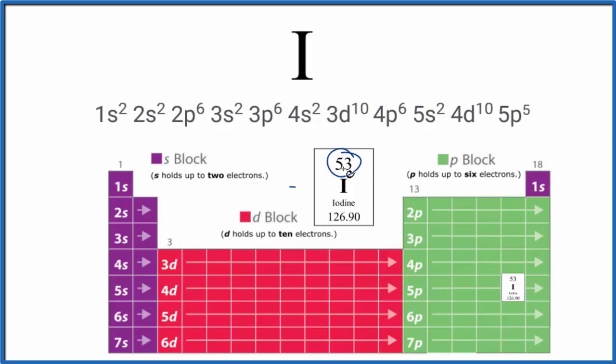So as we look at the periodic table here, we start off, we have 53 total electrons for the iodine electron configuration. We have 1s¹, 1s². S only holds up to 2. So we have our 1s².